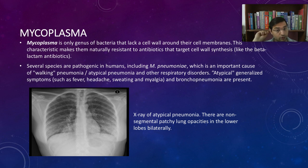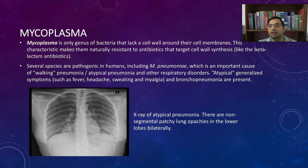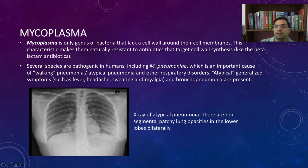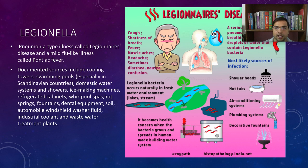Mycoplasma pneumoniae is an important cause of pneumonia, also called atypical pneumonia or walking pneumonia. It is a community-acquired pneumonia and is called atypical because the typical features of pneumonia are absent. The person has mild fever, headache, sweating, and myalgia. On X-ray, bronchopneumonia type distribution is seen — not one lobe but multiple areas affected, typically in the lower lobe.